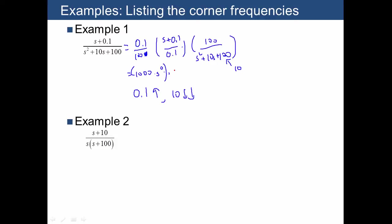We also need to pick a starting point, and the starting point much smaller than 0.1 might be 0.01. If we plug in 0.01 with s to the zero, we're just going to get 1 over a thousand — in other words 0.001 — and we'll also get a phase of 0, all from this first term.